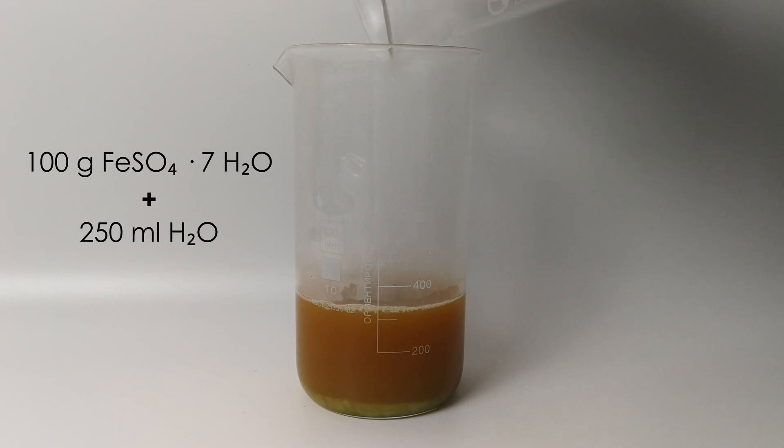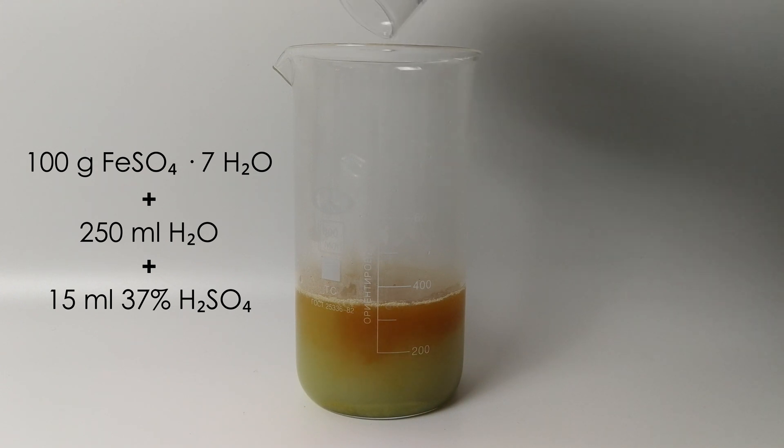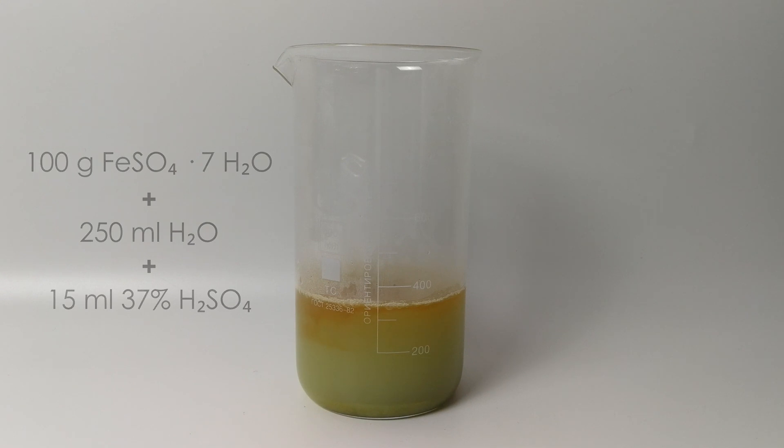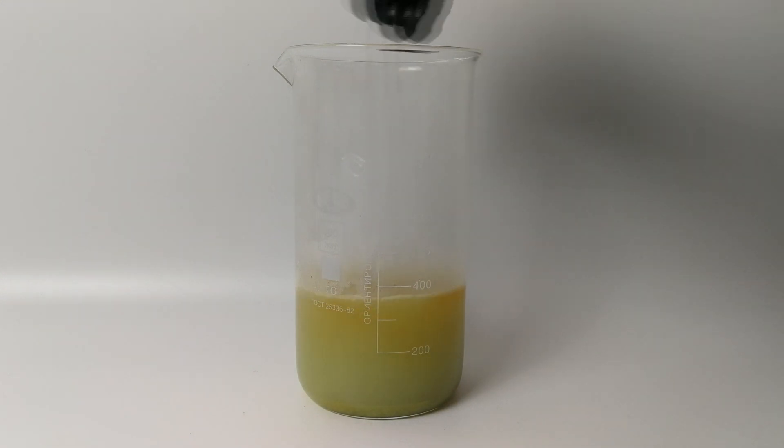The solution becomes murky brown due to a suspension of basic ferric sulfate. To dissolve it, we add 15 milliliters of 37% sulfuric acid. Overall, the concentration of ferric ions is quite low, and since they do not give a precipitate with oxalic acid, they won't interfere with our synthesis.